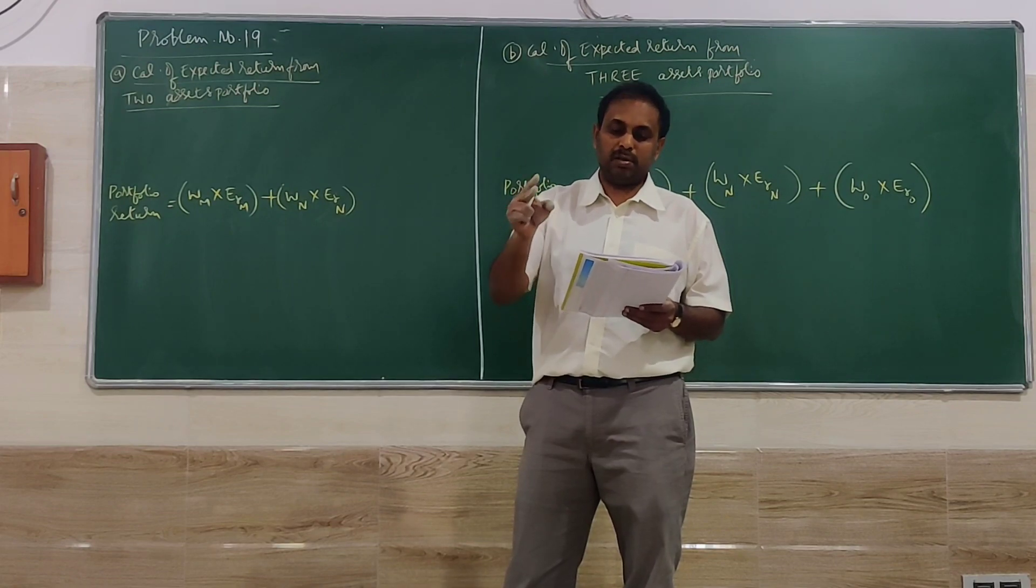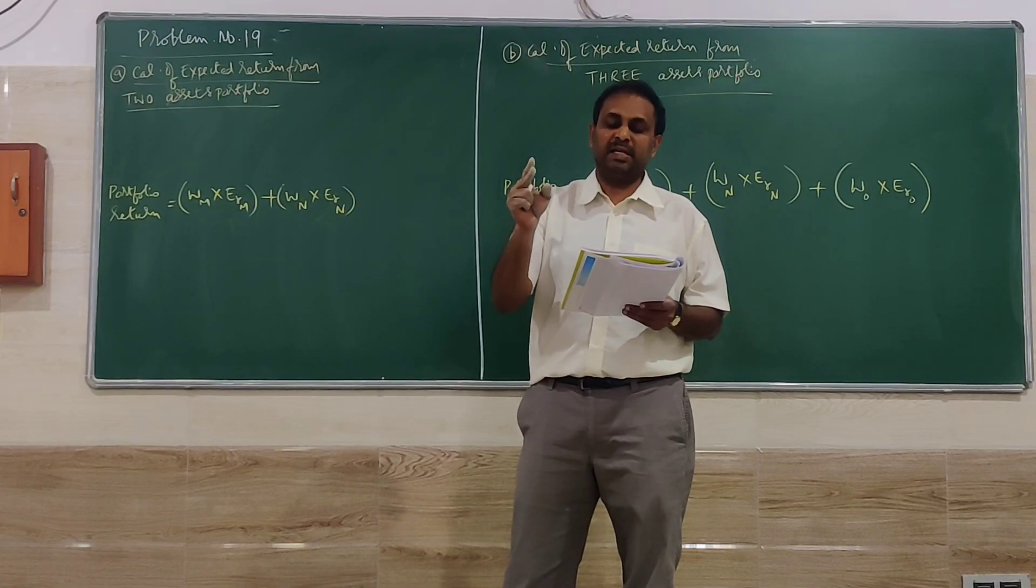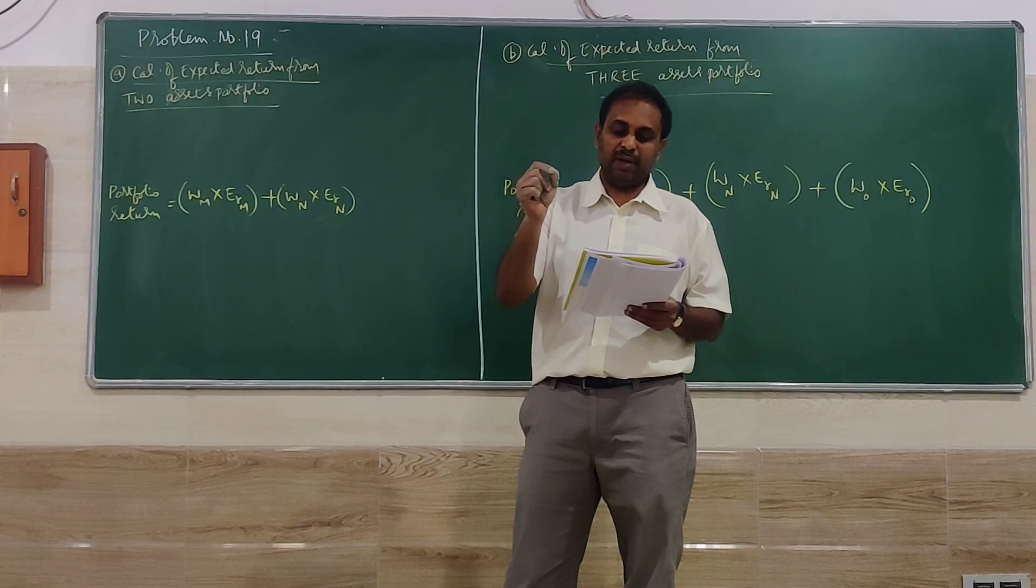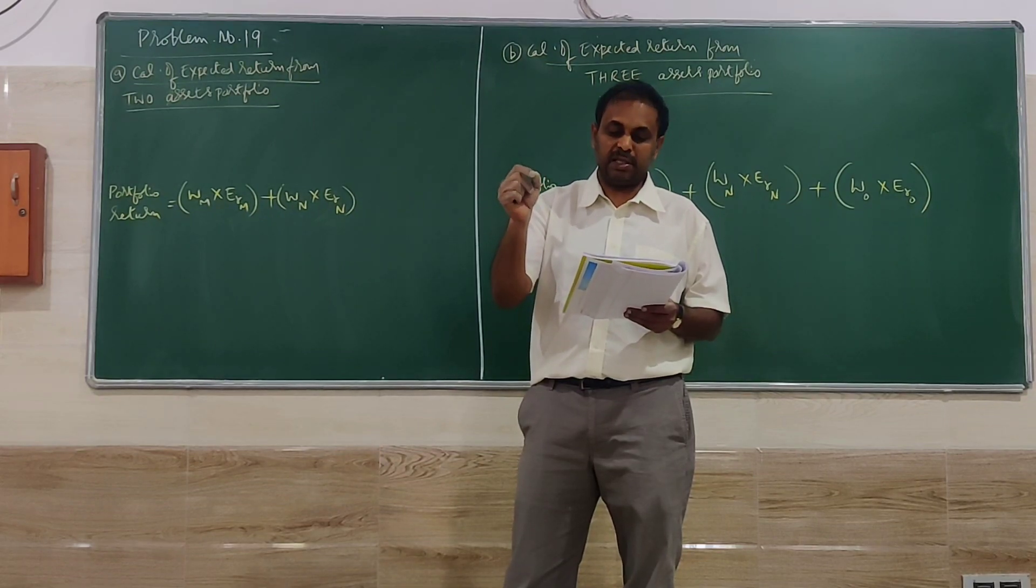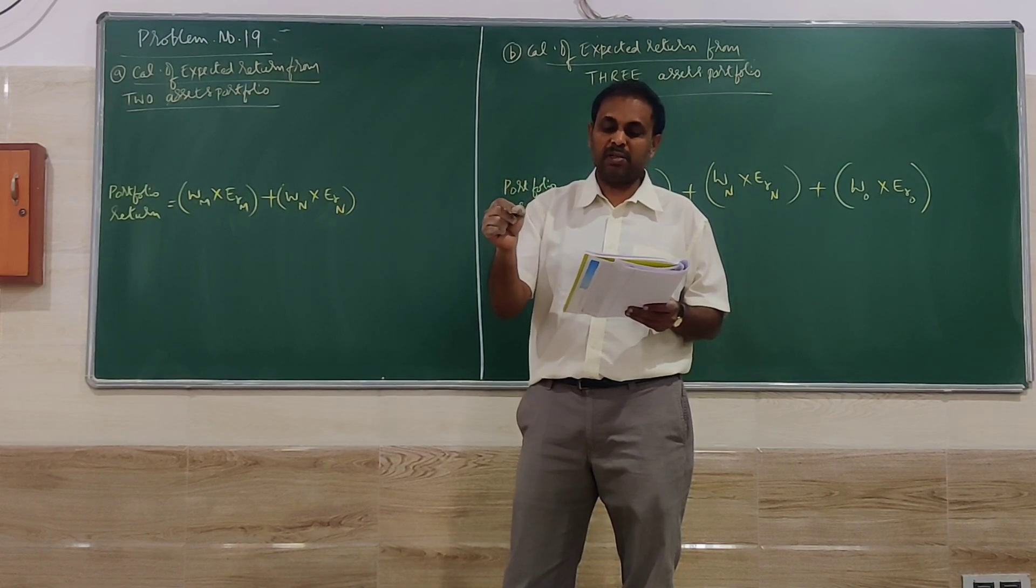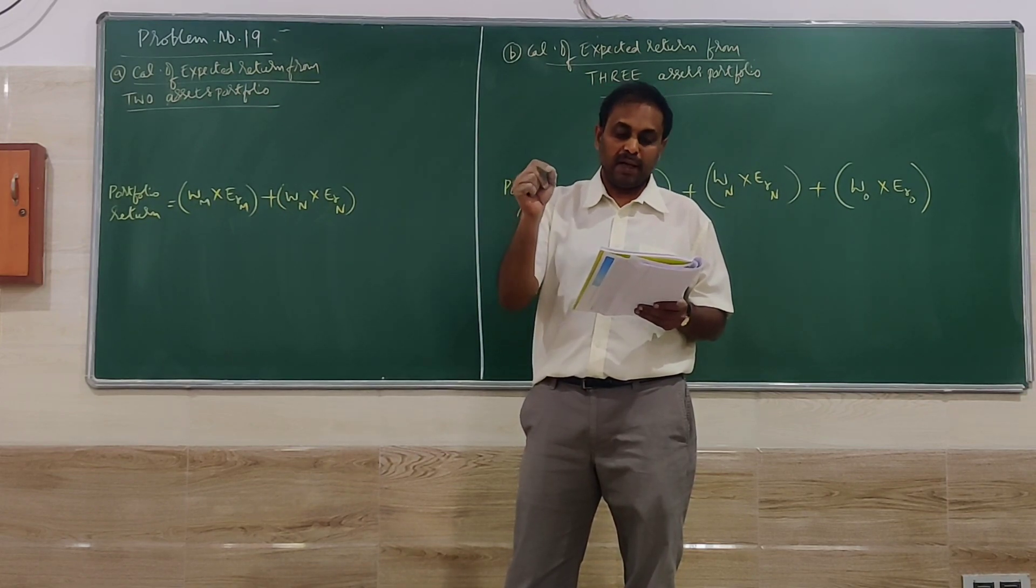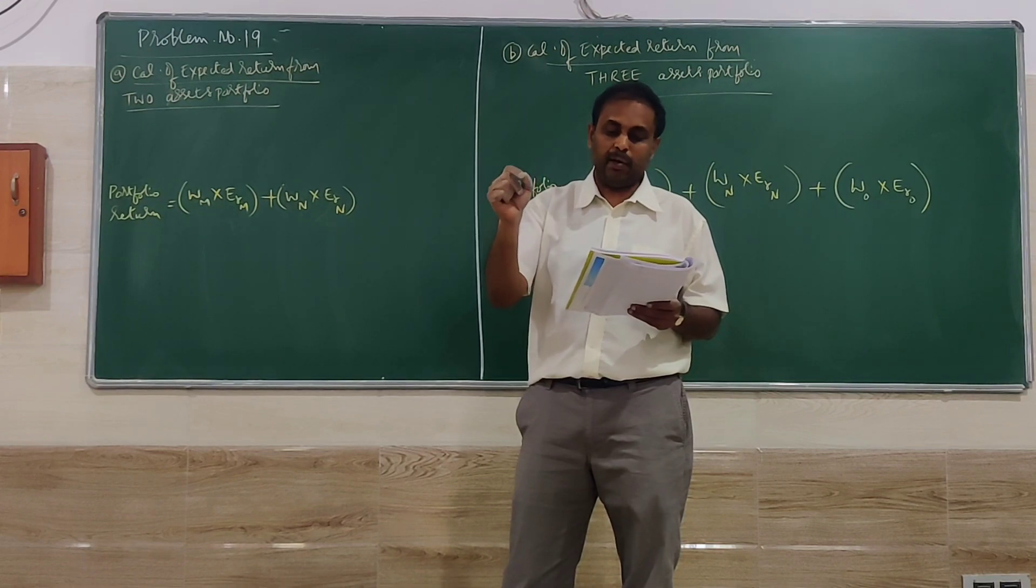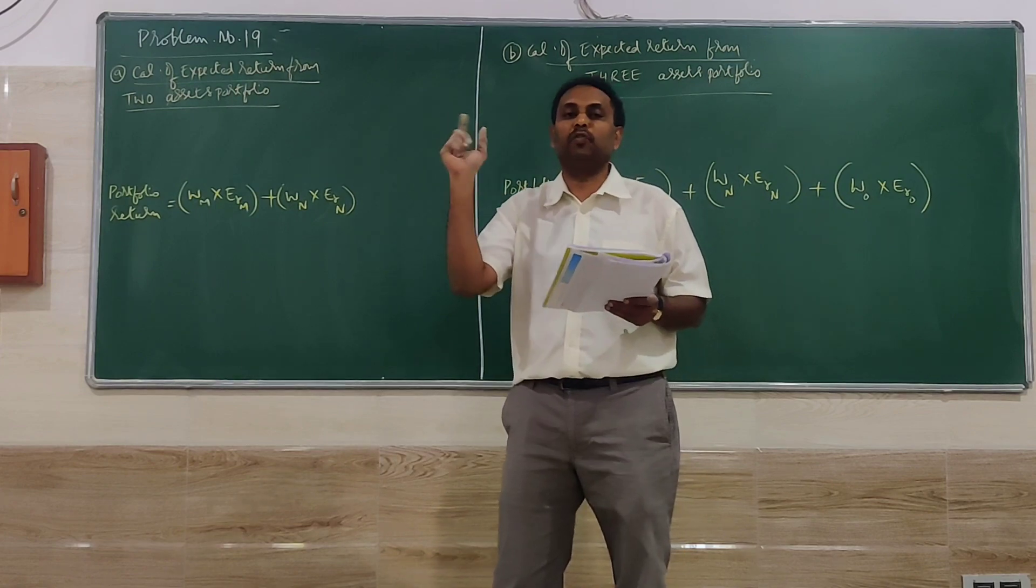So there are two company stocks. One is M, the other is N. The first one has 20%, the second one has 16% return. The investors want to invest in both securities. Calculate the expected rate of return from the two-asset portfolio.